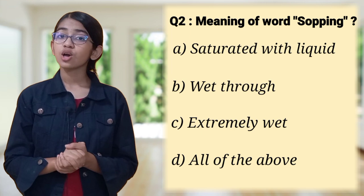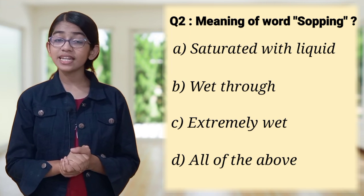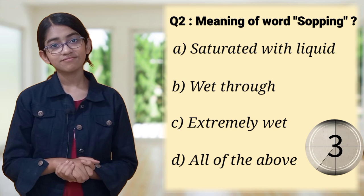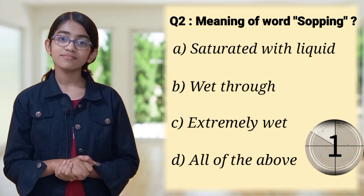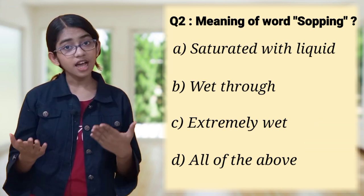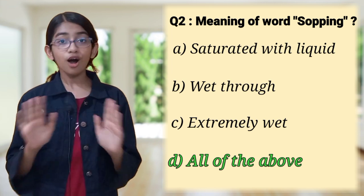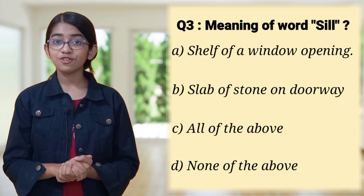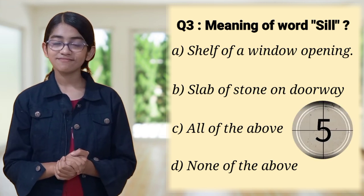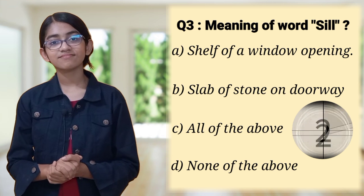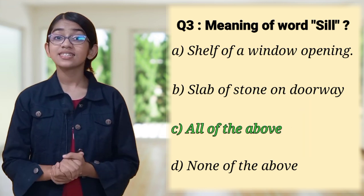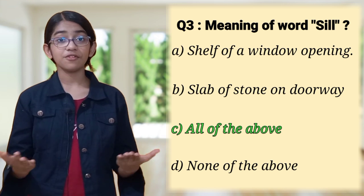The second question is, what is the meaning of the word sopping? The correct answer is D — all of the above. The third question is, what is the meaning of the word sill? The correct answer is C — all of the above.